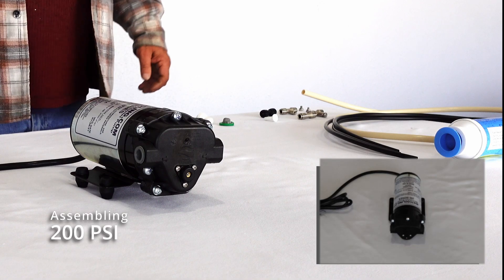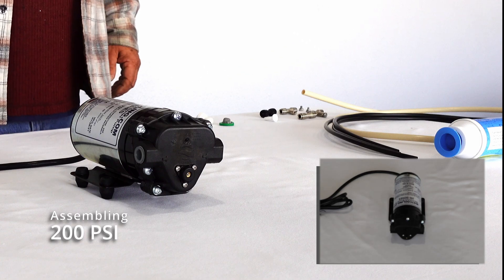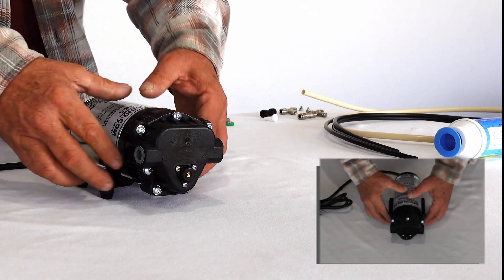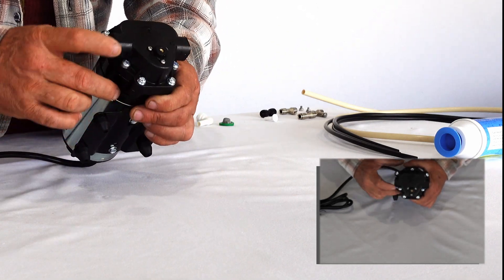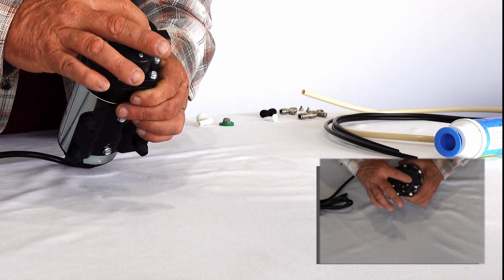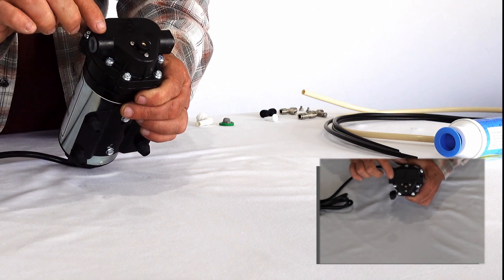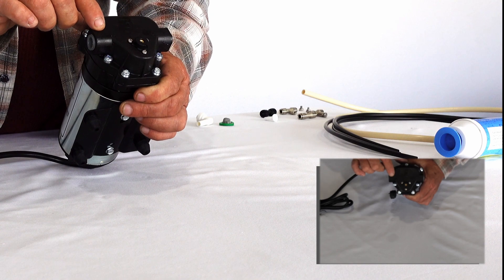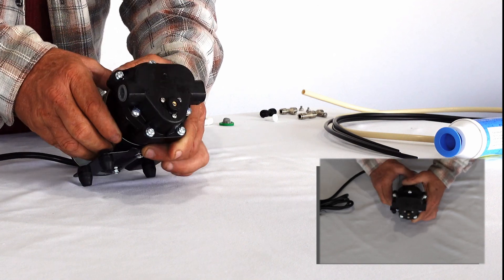This is how to assemble your system. If you look on the front of the pump there's an arrow going in and an arrow going out. This would be your inlet. This would be your outlet.